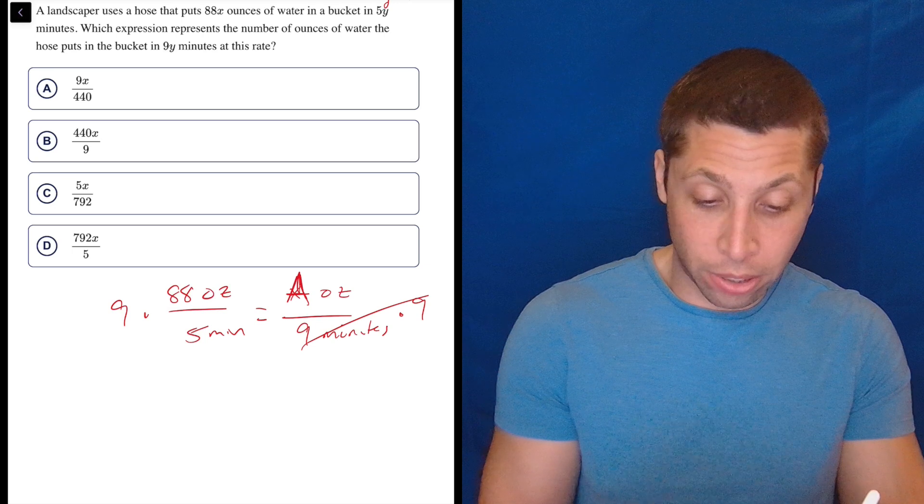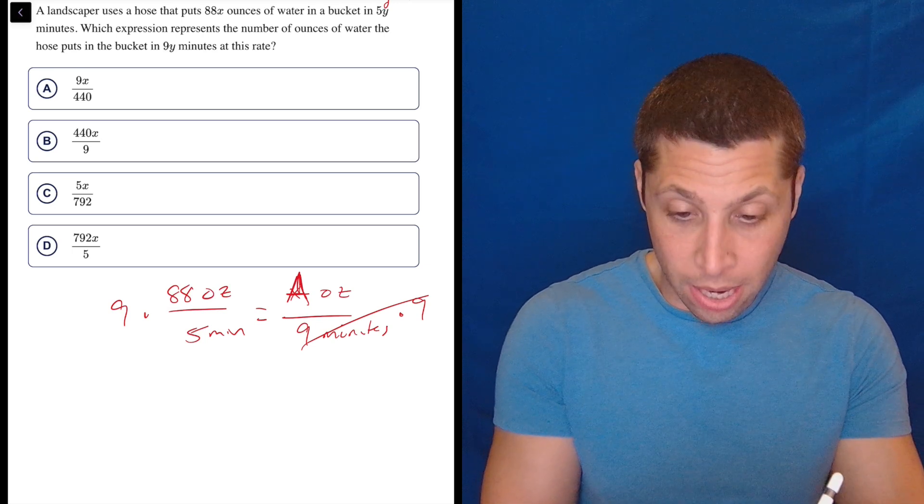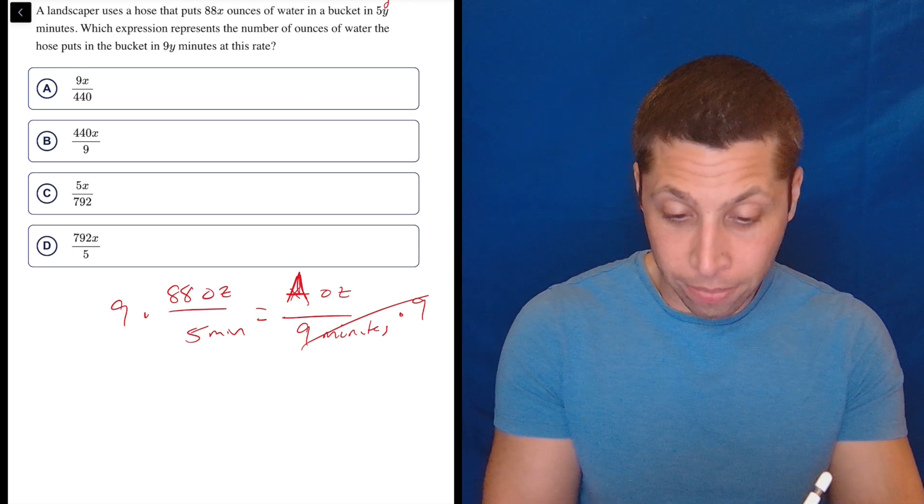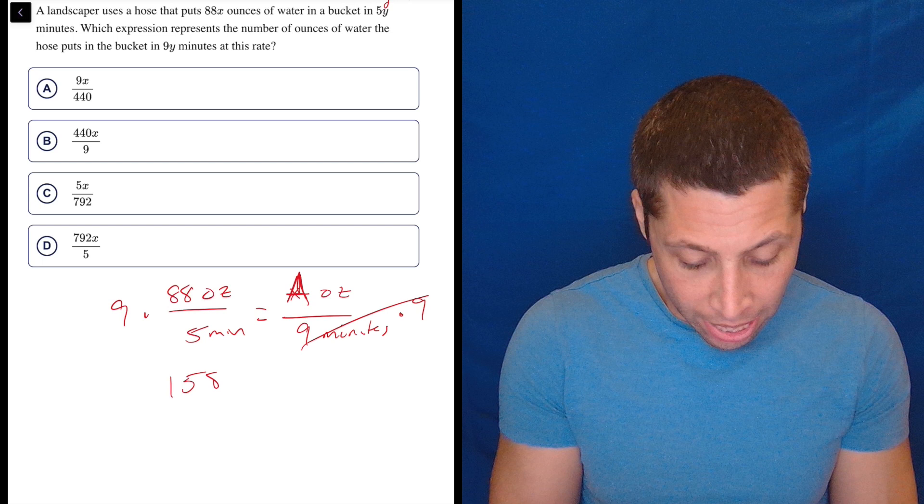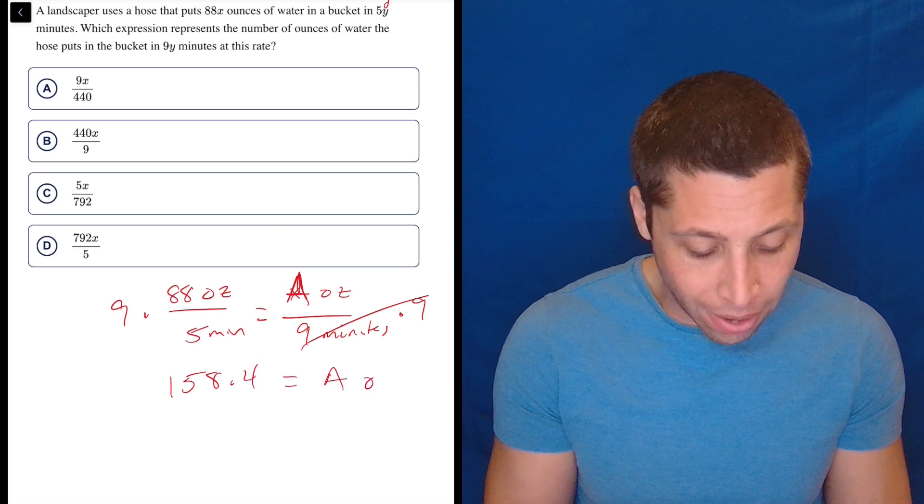Let's see what we get. Regular calculator. 88 times 9 divided by 5 is 158.4. So that is the number of ounces.